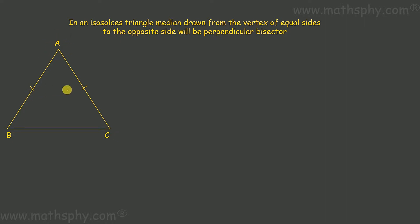If I draw a median from A like this, then this median AP will be a perpendicular bisector of opposite side BC. Perpendicular bisector—first of all it says perpendicular, means this is 90 degrees. Bisector means BP and CP will be equal. This is 90 degrees, means this will also be 90 degrees.